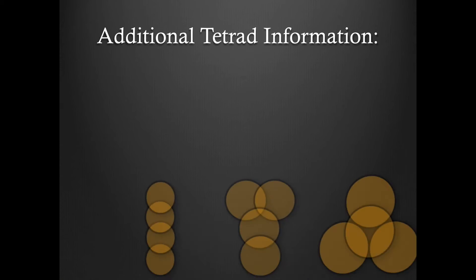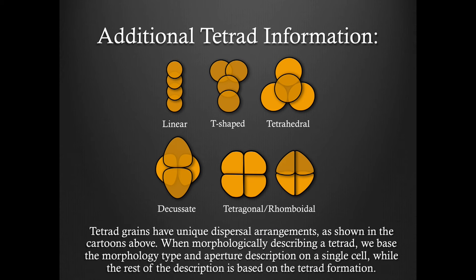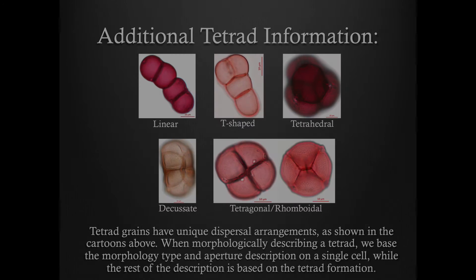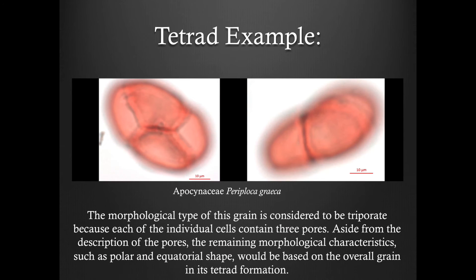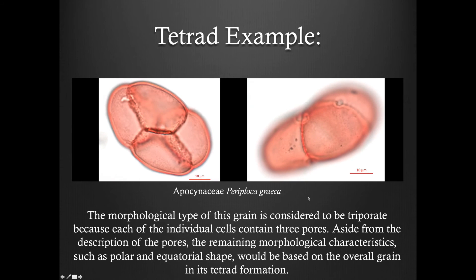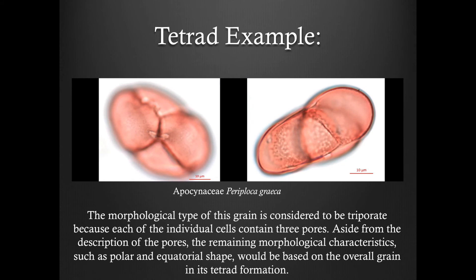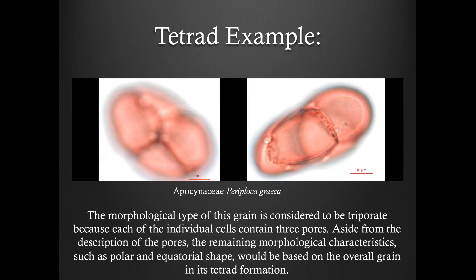Additional tetrad information. Tetrad grains have unique dispersal arrangements, as shown in the cartoons above. When morphologically describing a tetrad, we base the morphology type and aperture description on a single cell, while the rest of the description is based on the tetrad formation. Here are a few examples. Take a moment to watch these Z-Stack videos. The morphological type of this grain is considered to be triporate, because each of the individual cells contain three pores. Aside from the description of the pores, the remaining morphological characteristics, such as polar and equatorial shape, would be based on the overall grain in its tetrad formation.